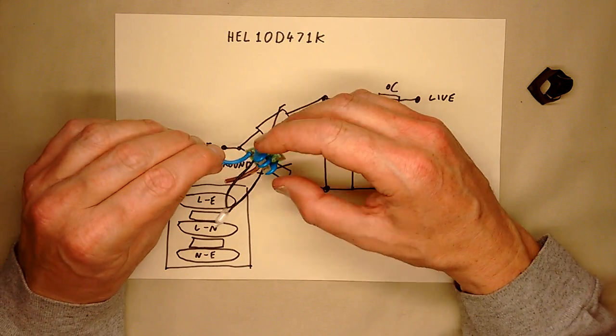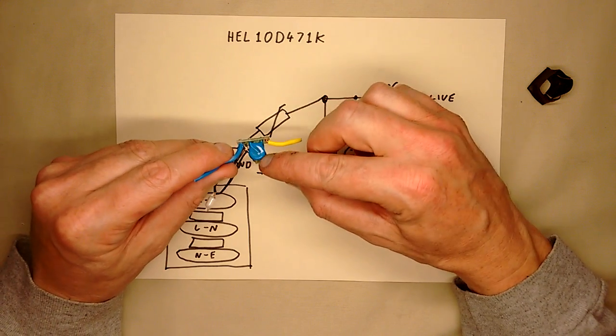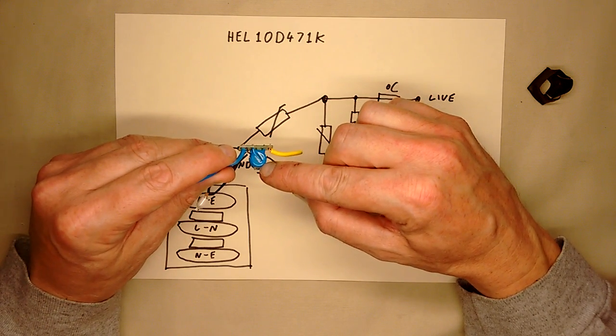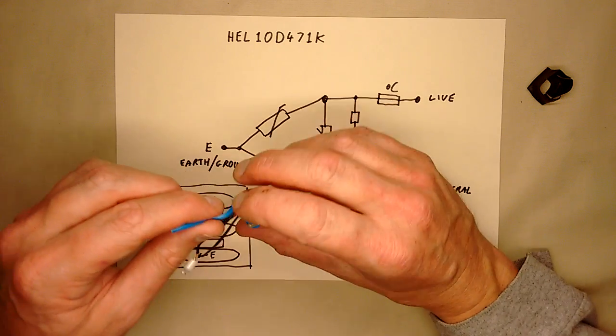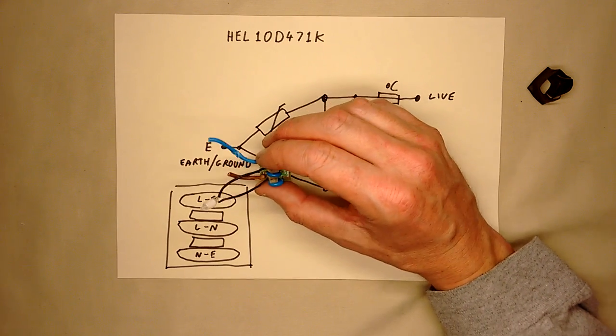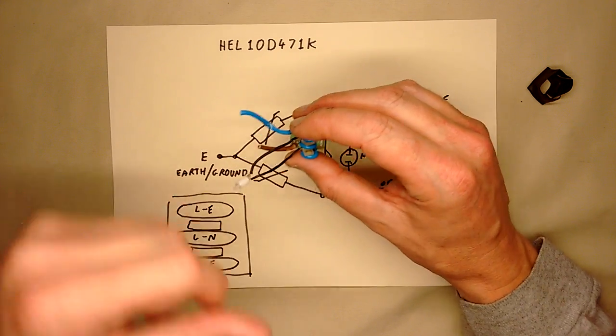But the nature of these metal oxide varistors is that every time they absorb a transient, every time their voltage is exceeded, they just end up failing a little bit internally.